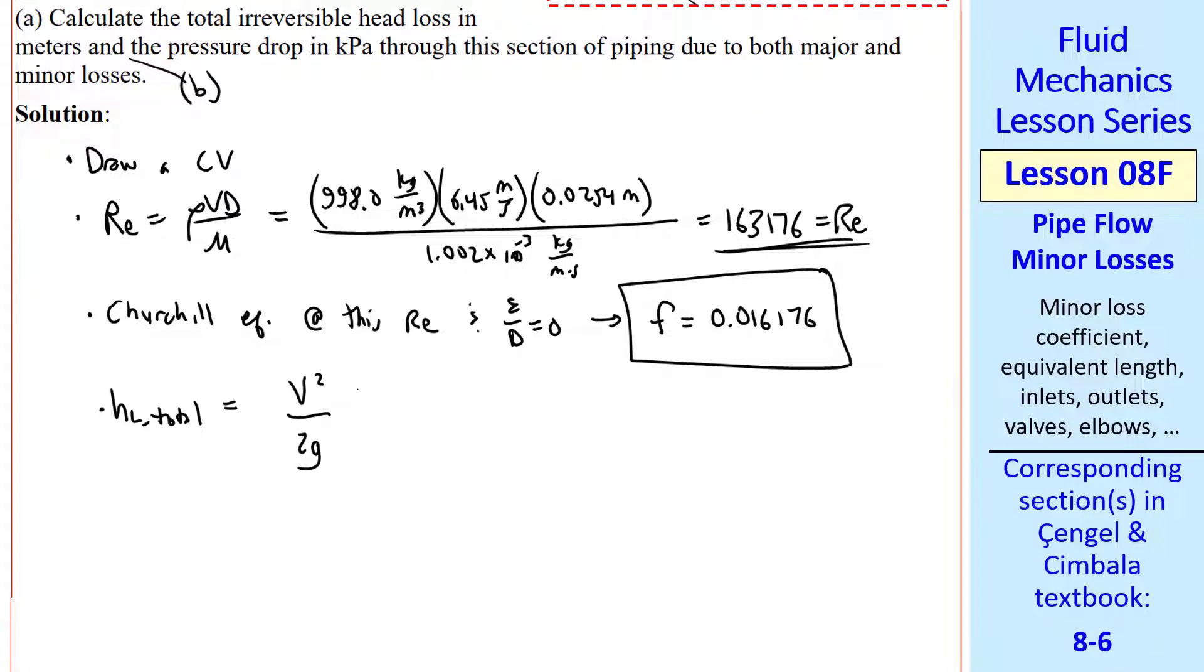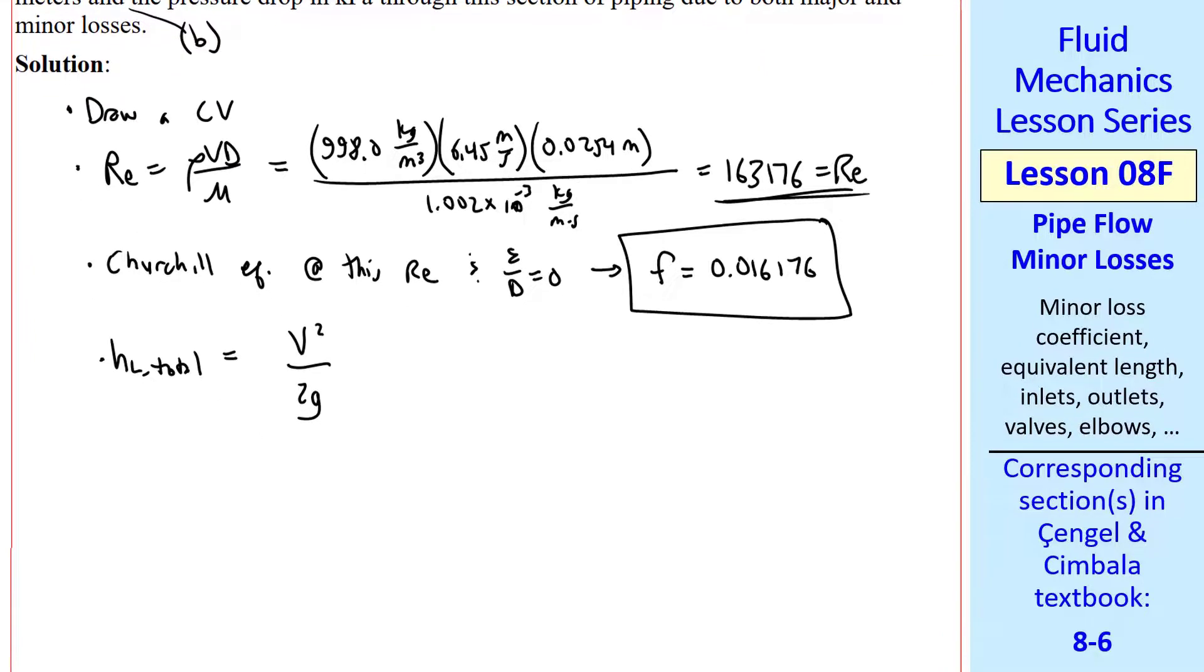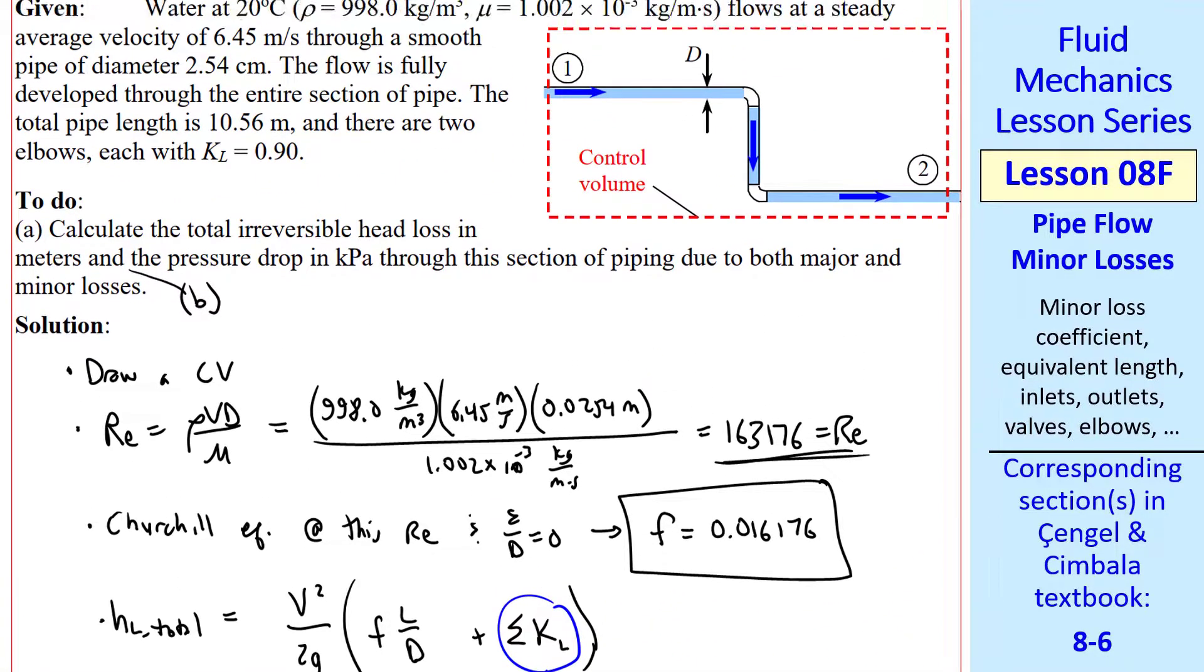We have two elbows each with 0.90 KL, and those are the only two minor losses we have in this setup.